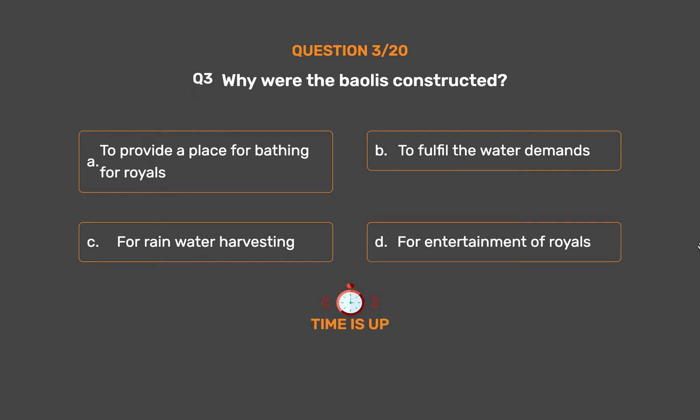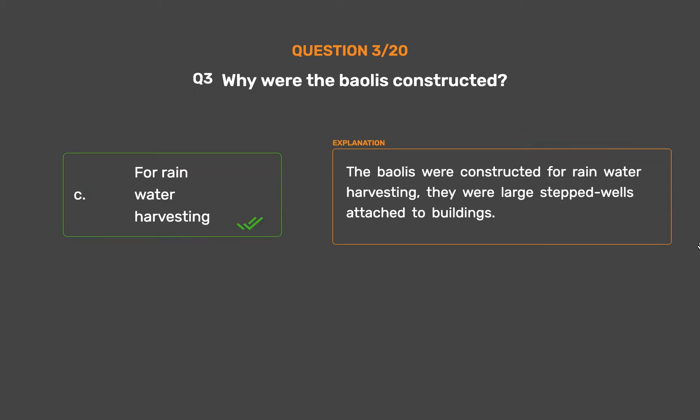The correct answer is Option C: For rainwater harvesting. The Bawalese were constructed for rainwater harvesting. They were large stepwells attached to buildings.